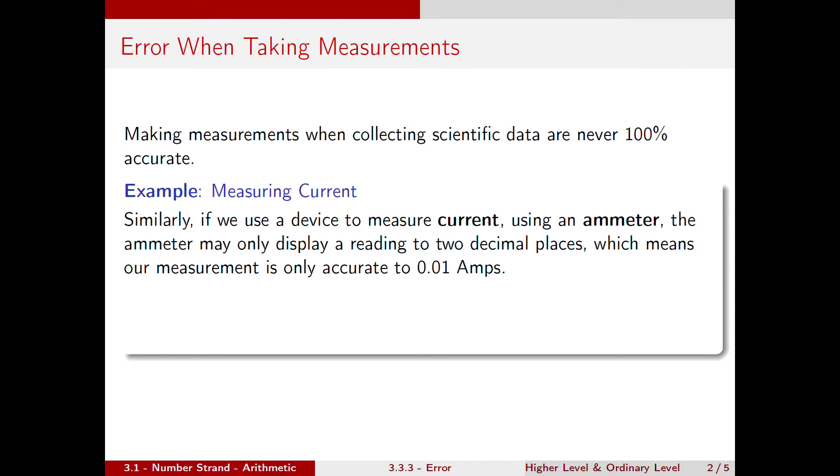If we look at an example of measuring current, if we use a device to measure current such as an ammeter, the ammeter may only display a reading to two decimal places, which means our measurement is only accurate to 0.01 amps.